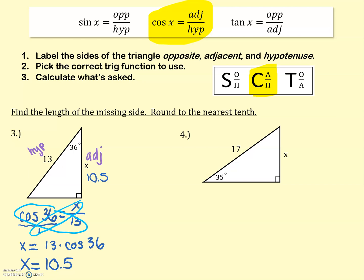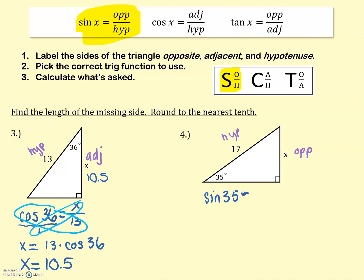Same thing for the next problem. We're given an angle measure and we have the 17 and the x. Let's label our sides. Across from that right angle is the hypotenuse. Opposite of the angle we're talking about — opposite of the 35 — is the x. That's all we actually need; we're not going to use the unlabeled side. Using opposite and hypotenuse, we're going to use the sine function. Sine of 35 equals opposite x over hypotenuse, which is 17.